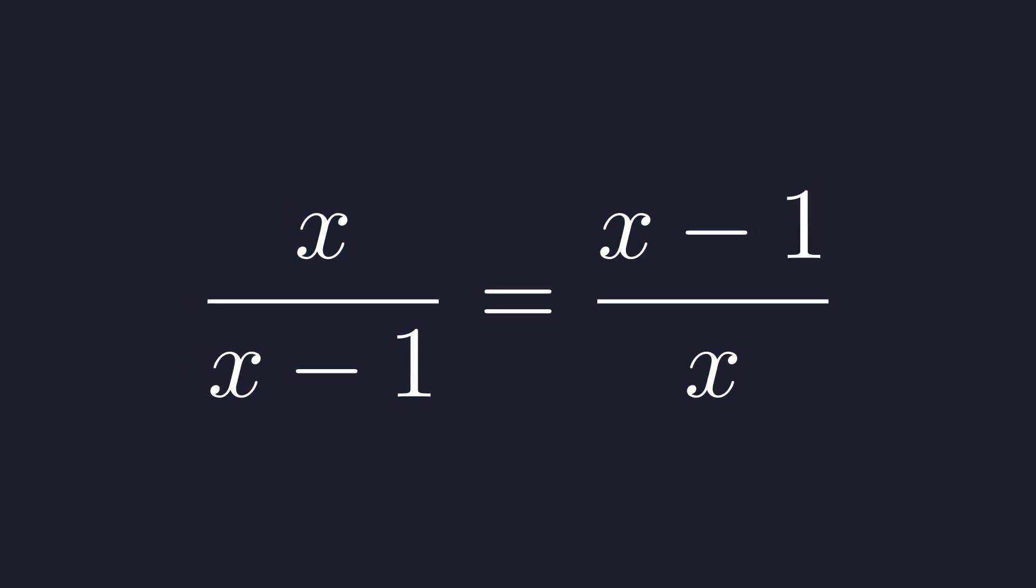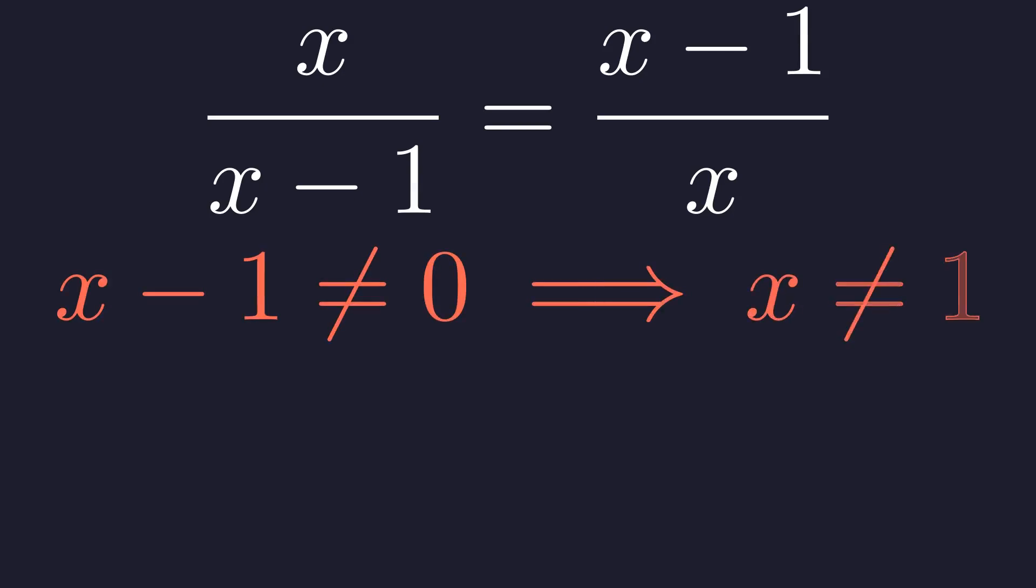On the left side, the denominator x minus one cannot be zero. So x cannot equal one. That's our first restriction, and we'll need to remember this.